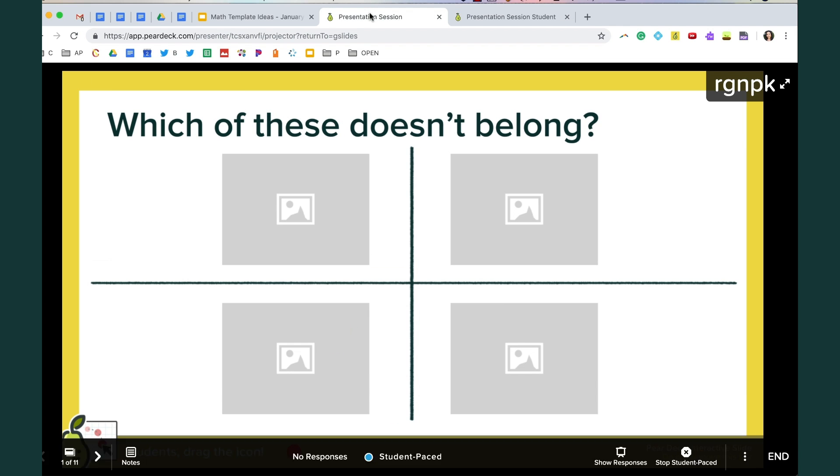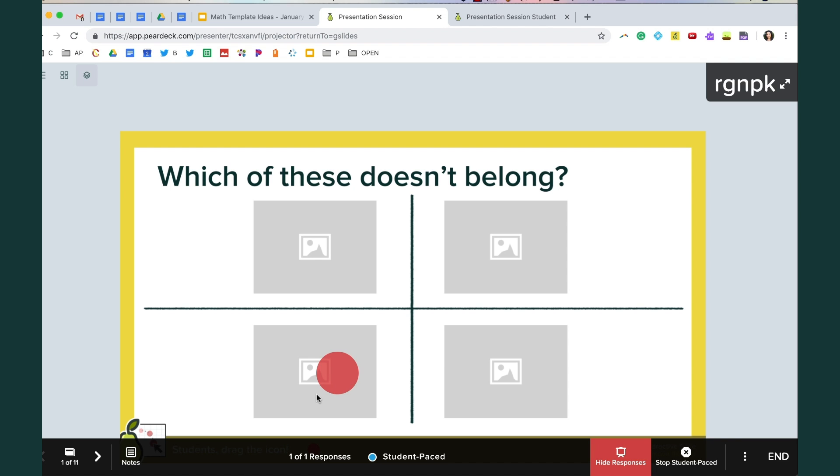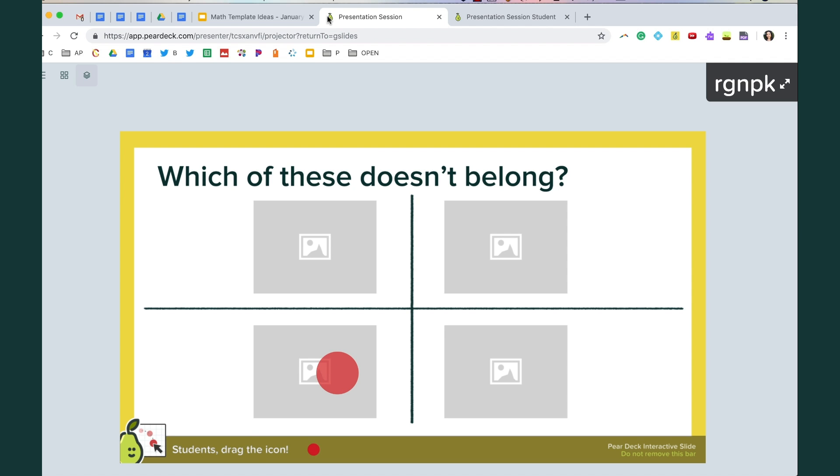On the teacher end you can show responses and that would actually overlay all of the dots. An idea for that would be to see if most of the class agrees or not on which of these doesn't belong.